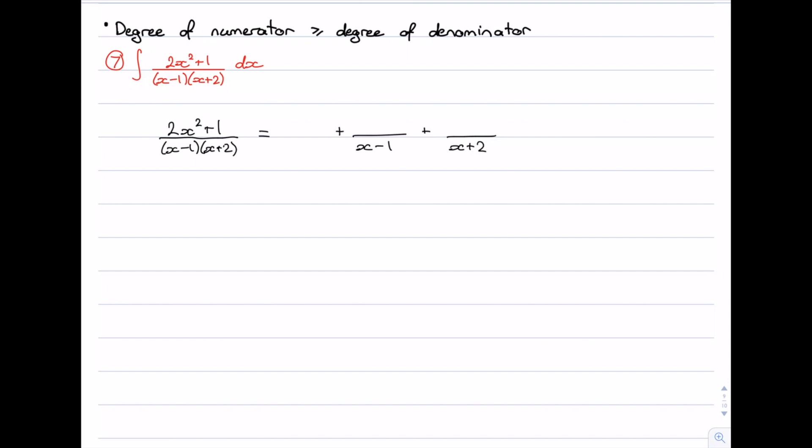And a degree 0 polynomial is just a constant. And that's why out here we have A, just a constant. And we already know that this needs to be B and this needs to be C.